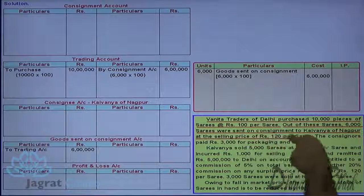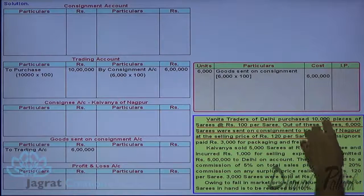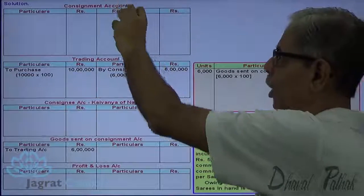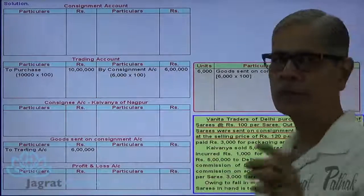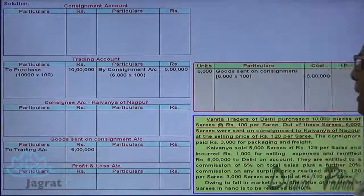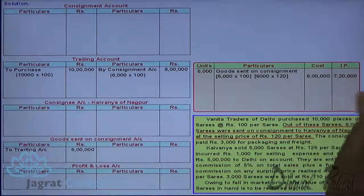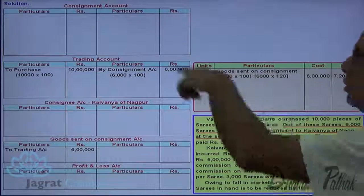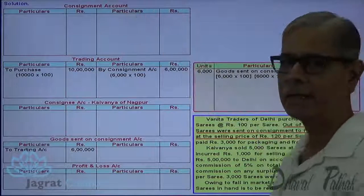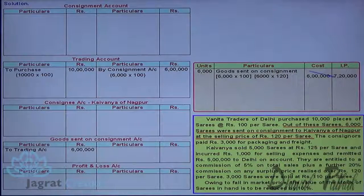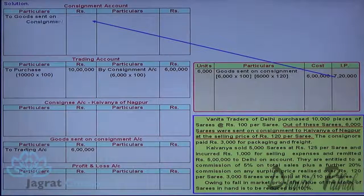Now, when goods are sent for consignment activity, the goods are sent at an invoice price. The invoice price is 6,000 into ₹120, which equals ₹7,20,000. So the consignment account is to be debited with the invoice price. Entry: consignment account debit to goods sent on consignment account credit — ₹7,20,000.